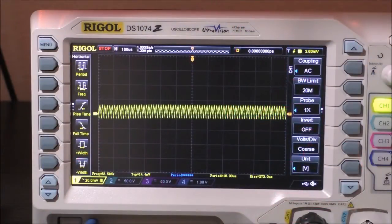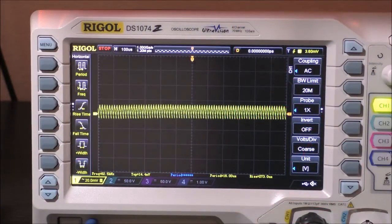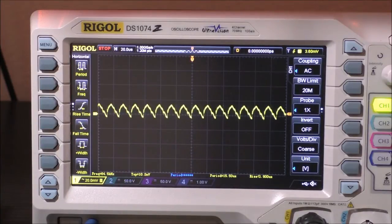Alright, so now this is measuring the ripple across a 20 ohm load resistor with 120 volts AC input. As we can see, we have a switching frequency of just about, according to my scope, it says about 65.8 kilohertz.